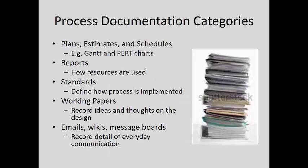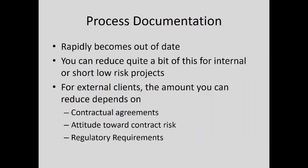Process documentation categories include plans, estimates, and schedules — like Gantt and PERT charts, or Kanban boards and burndown charts for agile development. Also reports on how resources are being used, standards defining how the process is implemented, working papers with ideas or thoughts on designs, and emails, wikis, or message boards recording everyday communication. Sometimes you need the emails to back up why certain decisions were made — even instant messages can serve that purpose. The problem with process documentation is it rapidly becomes out of date. You can reduce it significantly for internal or short low-risk projects, and that's where agile comes in.